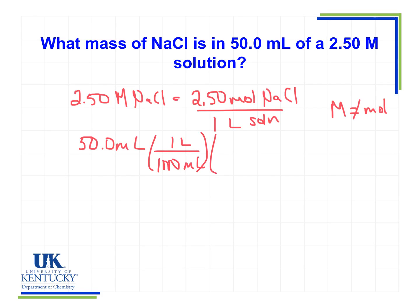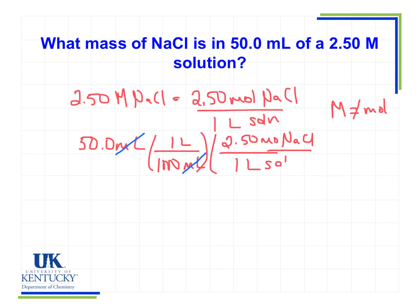Now I want to look at my molarity and see how I'm gonna use that in this calculation. I want to get rid of liters — I've already gotten rid of my milliliters, now I need to get rid of liters. Liters should be on the bottom so that they cancel — one on top, one on the bottom. So I have 2.50 moles of NaCl per one liter of solution.